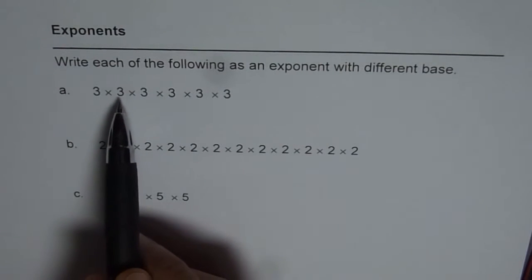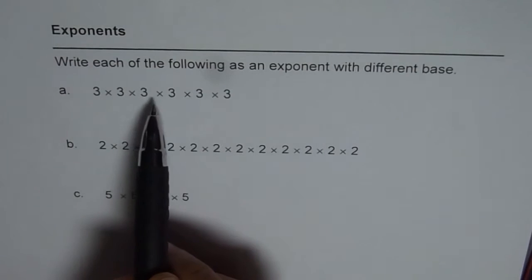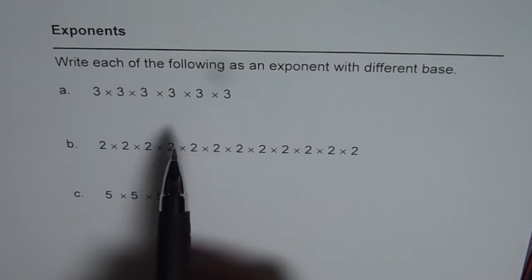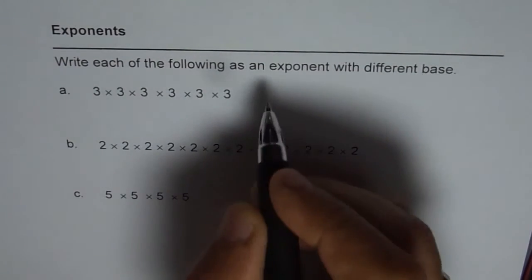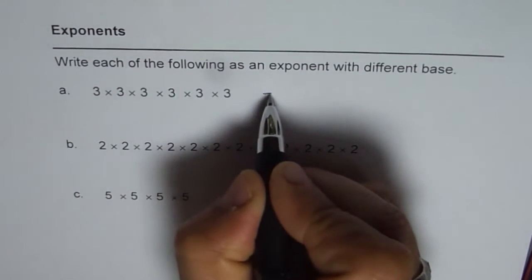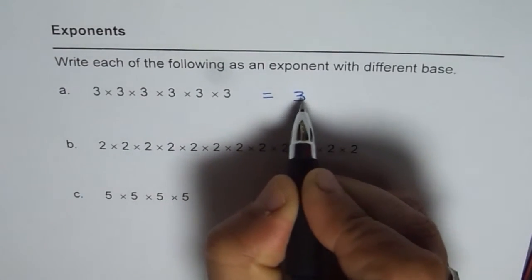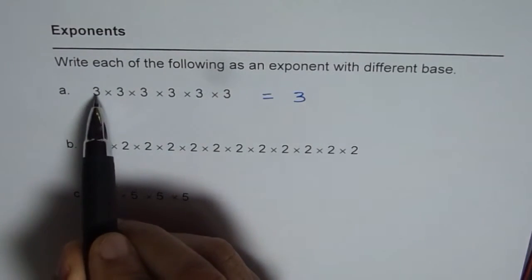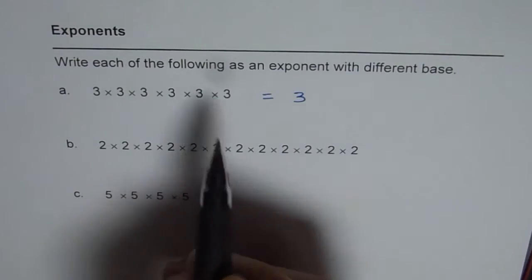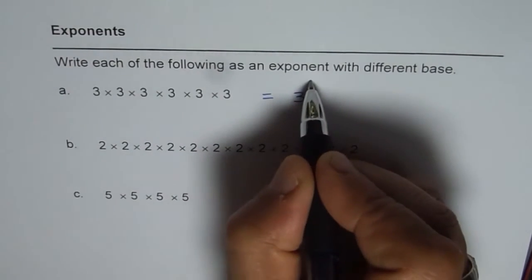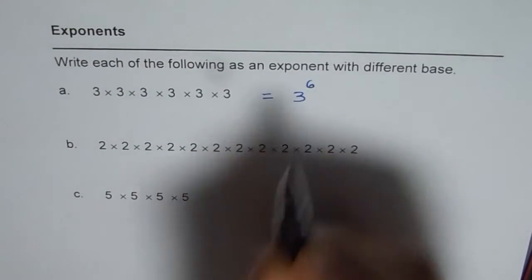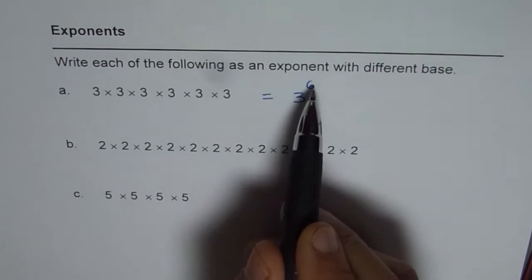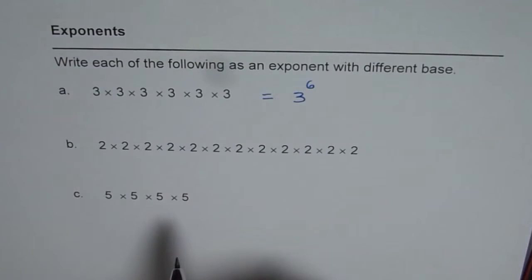We have 3 times 3 times 3 times 3 times 3 times 3. We can write this with base 3 and count the exponent: 1, 2, 3, 4, 5, 6. The exponent is 6, so we can write that number as 3 to the power of 6.